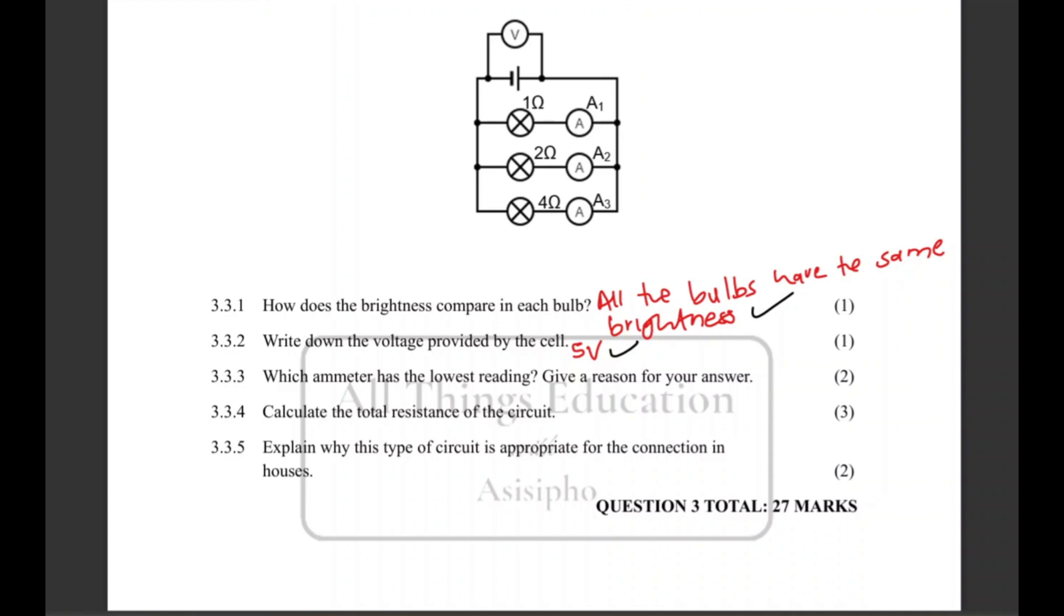Question 3.3.3: which ammeter has the lowest reading? Between the three ammeters A1, A2 and A3, which one has the lowest reading and you need to give a reason for that answer.